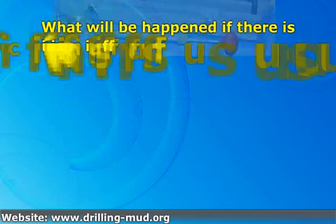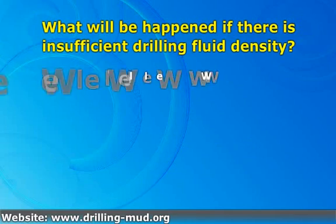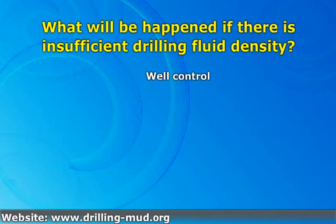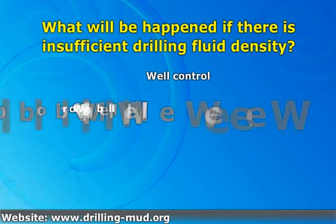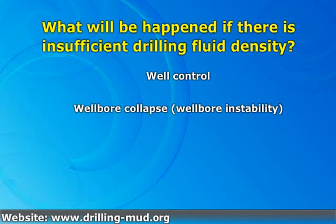What happens if there is insufficient drilling fluid density? First, well control — the well will be in an under-balance condition, so any formation fluids such as gas, oil, and water will enter into the wellbore. Second, wellbore collapse or wellbore instability — the wellbore will possibly become unstable if the hydrostatic pressure provided by the mud column is below formation pressure.